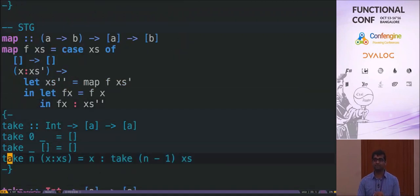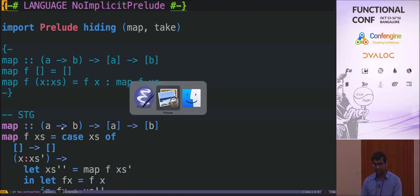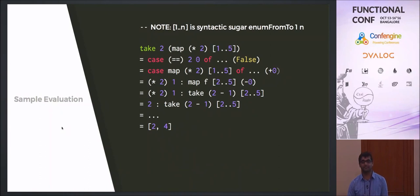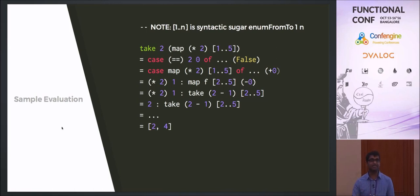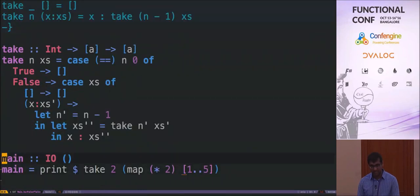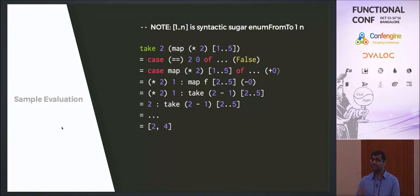Now we've broken down map and take into their most low-level form. The specific example is `take 2 (map (*2) [1..5])`. First, take evaluates whether n equals zero — comparing 2 to 0 gives false. Because of referential transparency, you can directly replace take with its definition. When the evaluation returns false, you go to that branch.